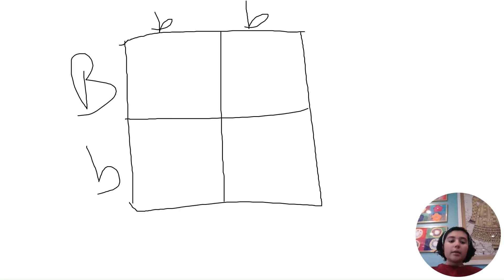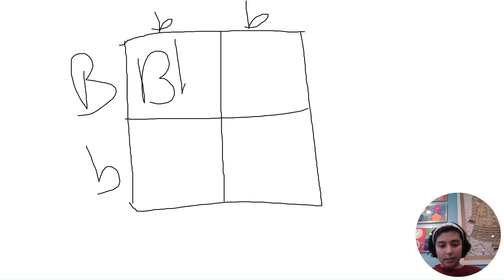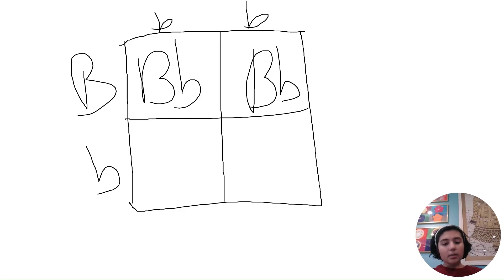Now to cross Punnett squares, you take one letter and it's almost like multiplication — you multiply it with all the other ones at the top. So you do the uppercase B times the lowercase b, and then it would look like this in the square. And the same goes for the other letters as well.